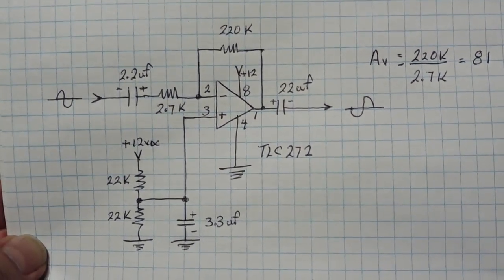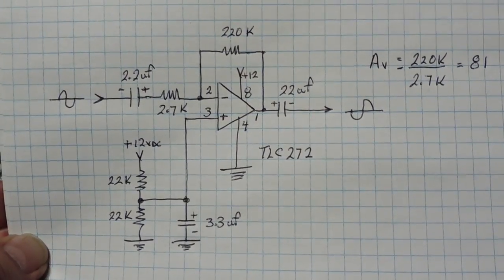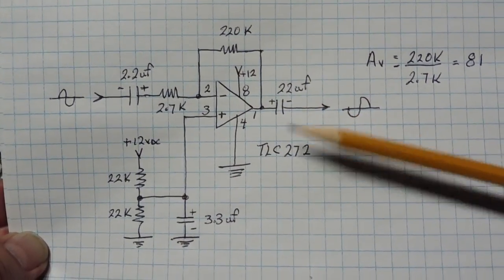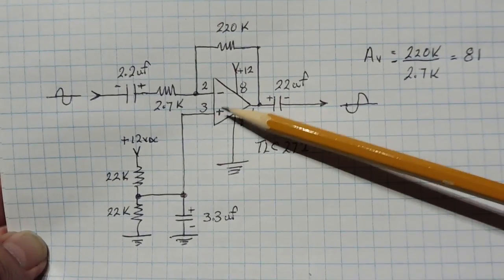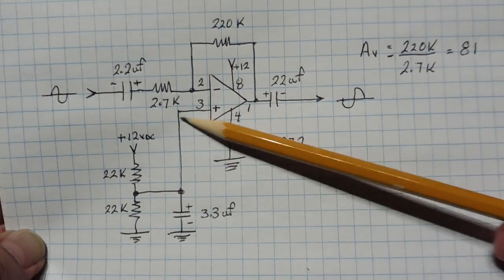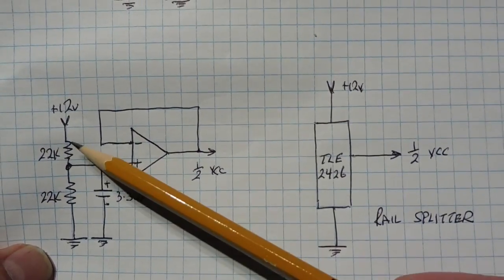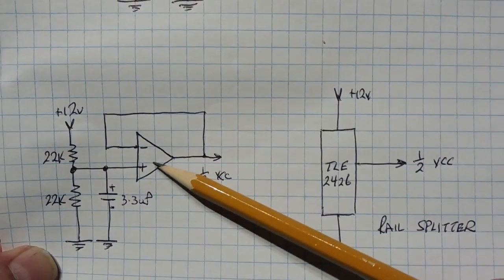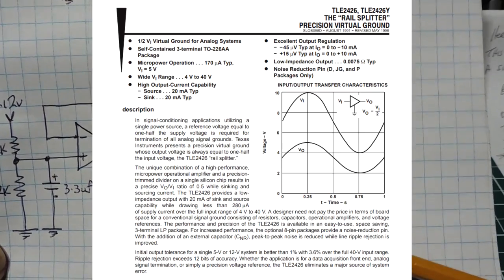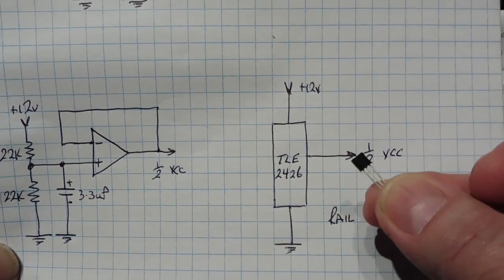Normally we power an op amp with a dual supply so the output swings above and below ground. With a single supply, we want the output to swing above and below 6 volts — half the supply — for a symmetrical output. We bias pin 3, the non-inverting input, with half VCC via a voltage divider. Alternatively, you can buffer the divider with a second op amp, or use a TLE 2426 rail splitter IC in a TO-92 package.